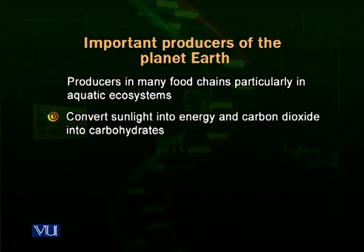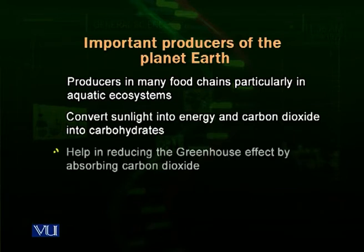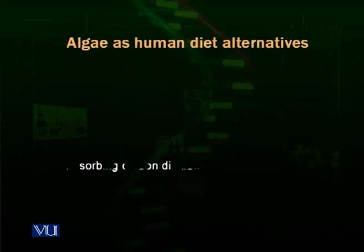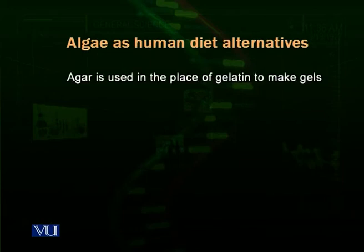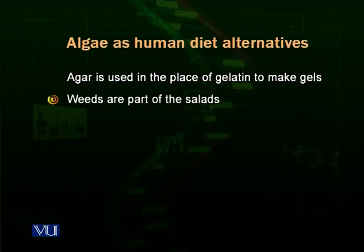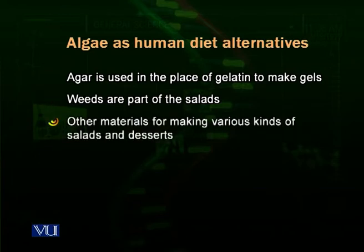Algae convert sunlight into energy and carbohydrates, and they help reduce the greenhouse effect by absorbing carbon dioxide from the environment. They are used as human diet alternatives — in place of gelatin, their gelatin-like materials and agar are used. Seaweeds are part of many salads, some algae are used to create specific tastes in ice creams, and other algal materials are used in making certain desserts and sweets.